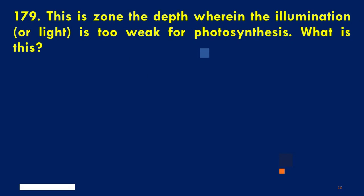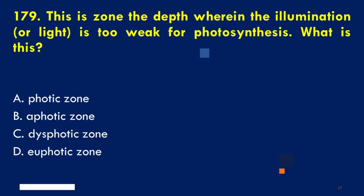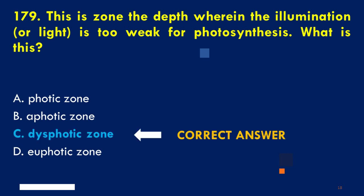This zone is the depth wherein the illumination, or light, is too weak for photosynthesis. What is this? A. Photic Zone, B. Aphotic Zone, C. Dysphotic Zone, D. Euphotic Zone. The correct answer is C. Dysphotic Zone.